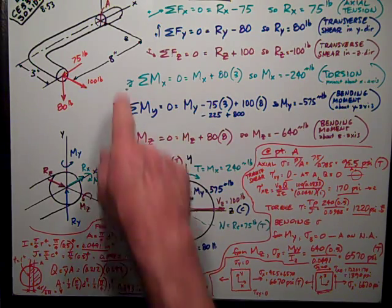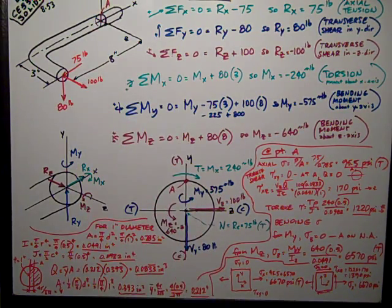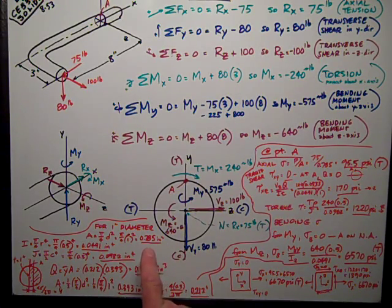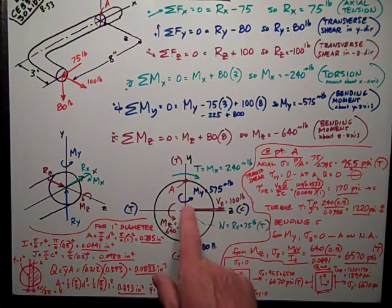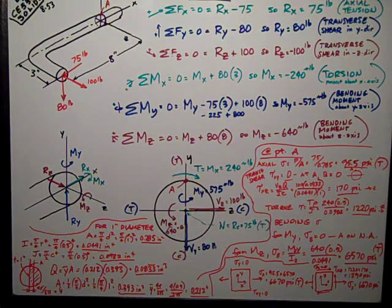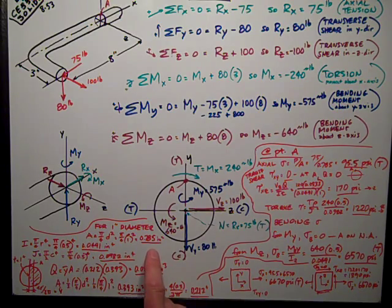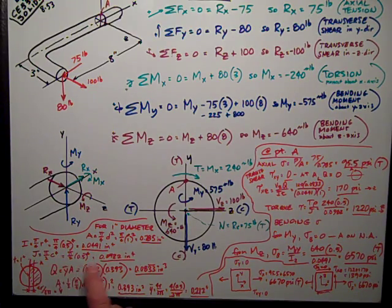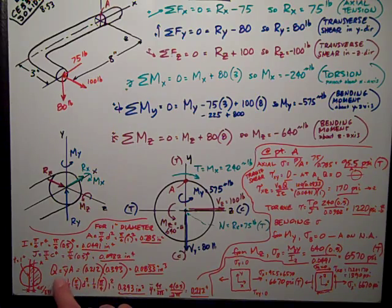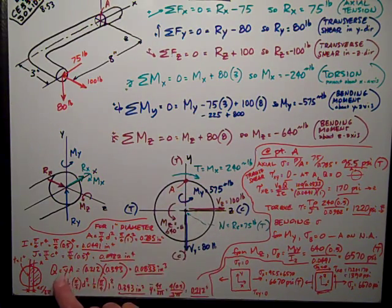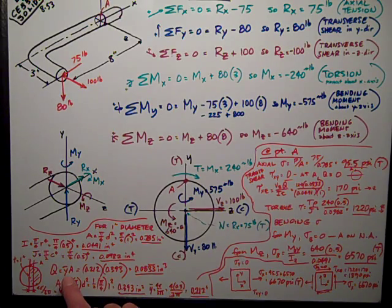We need to compute some section properties. I've assumed this is a one-inch diameter rod. The area is 0.785 inches squared. I need the moment of inertia, the polar moment of inertia J, and at this point A, I need to know Q for the transverse shear.